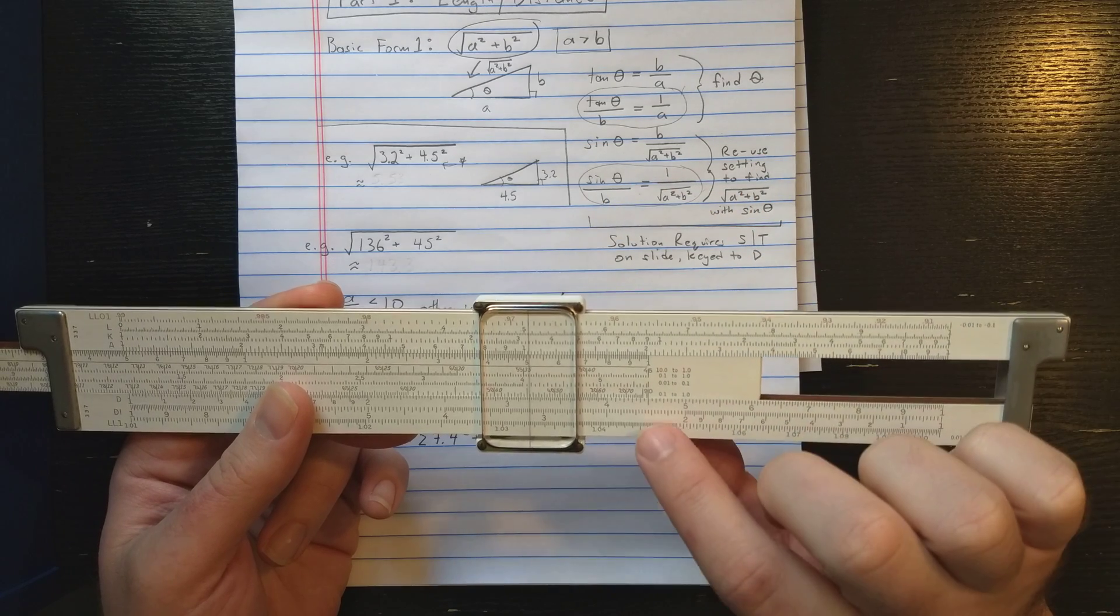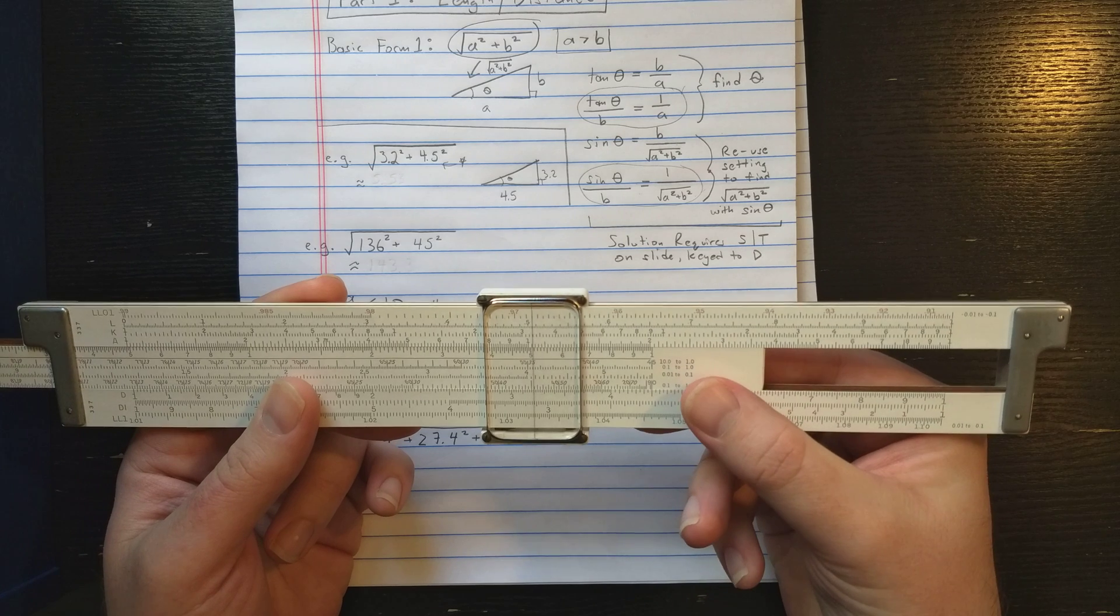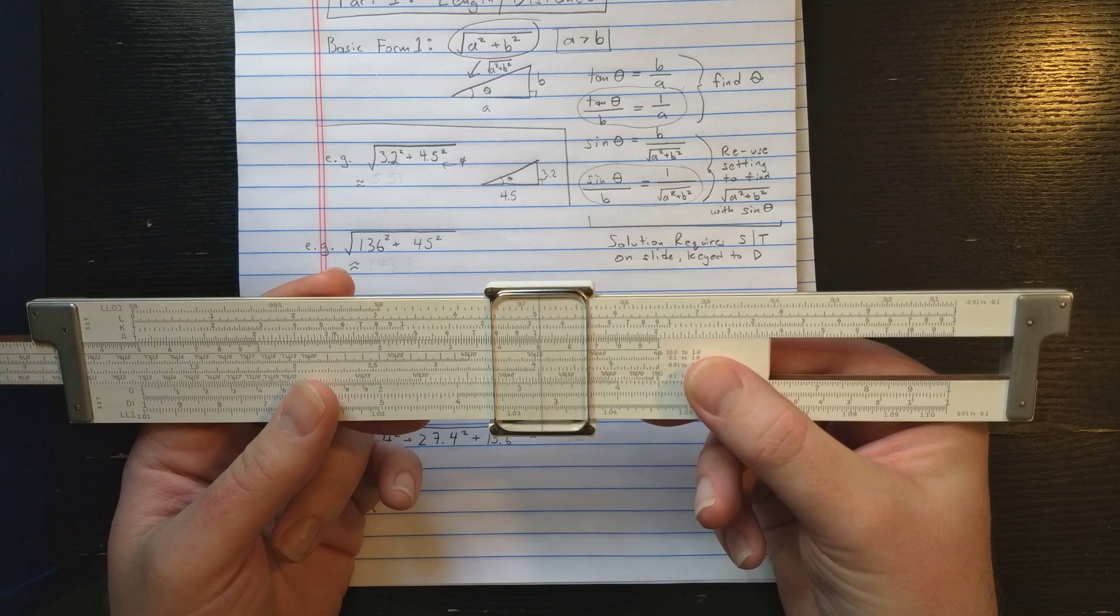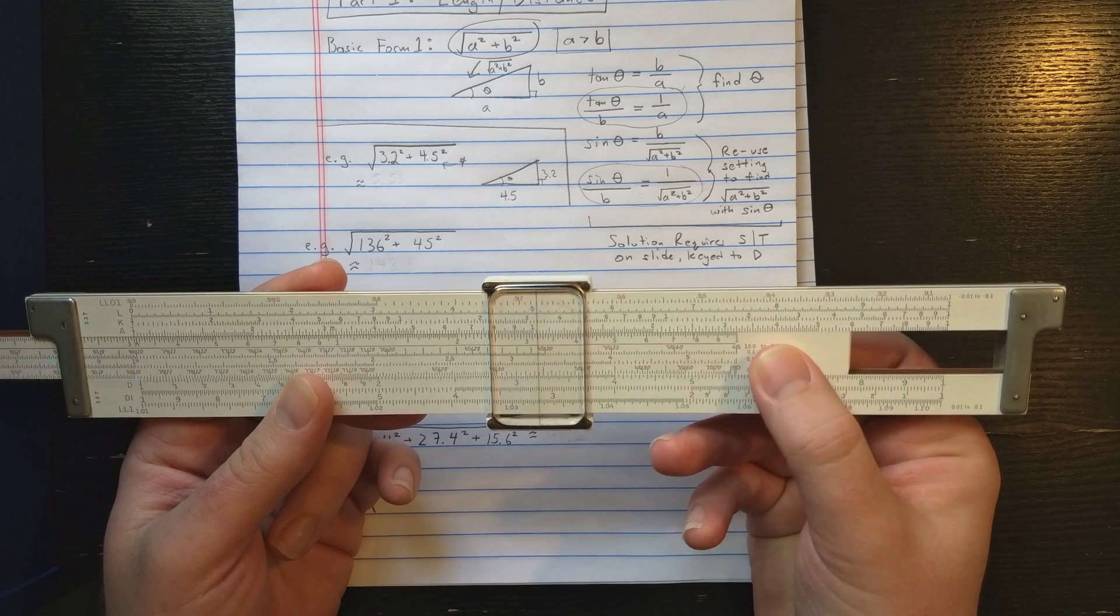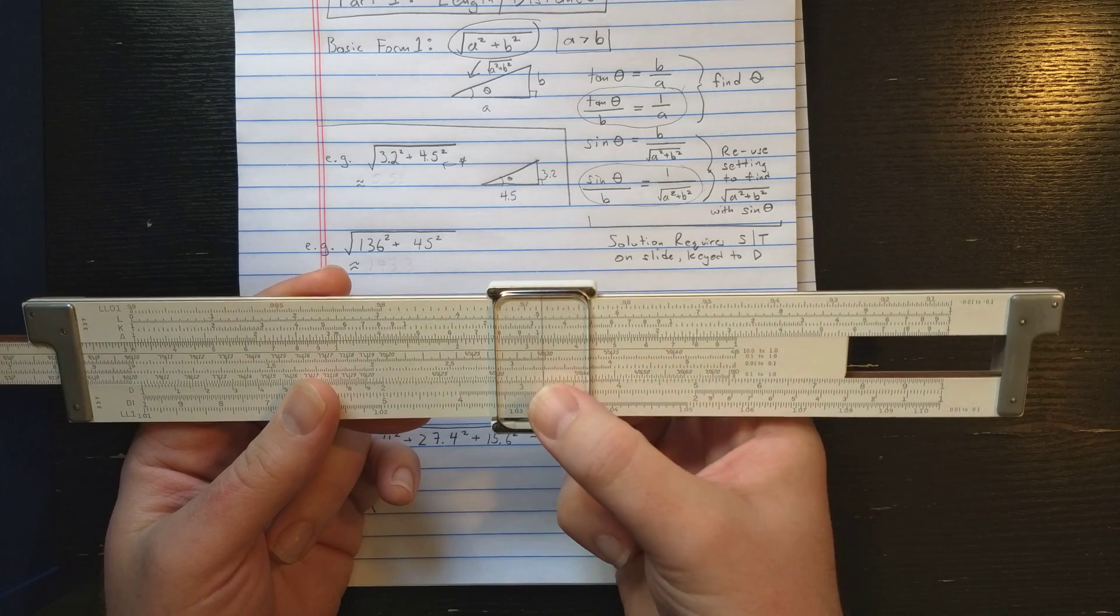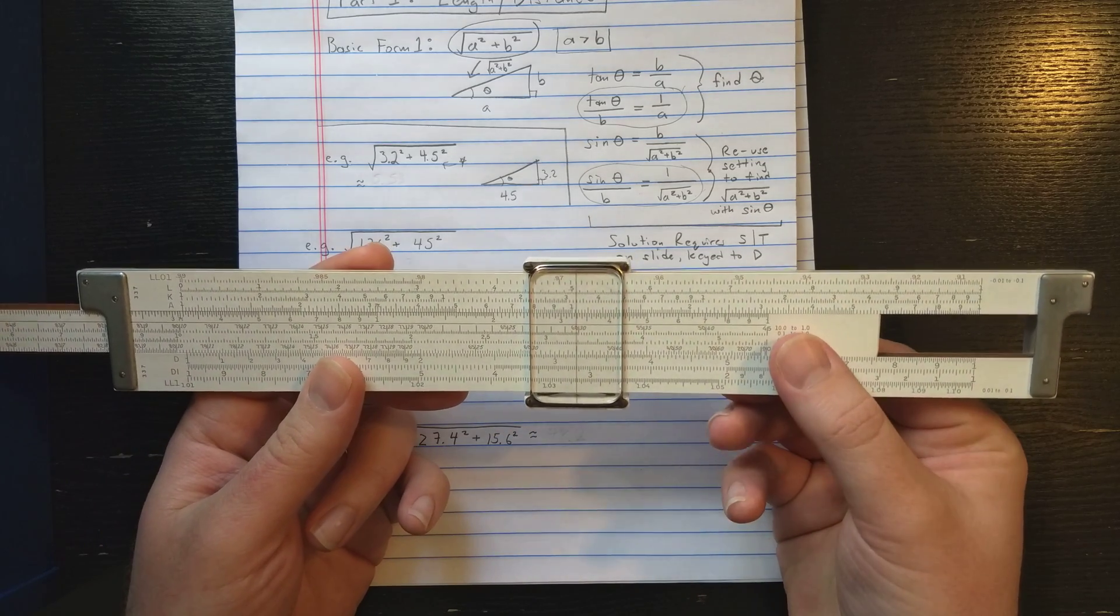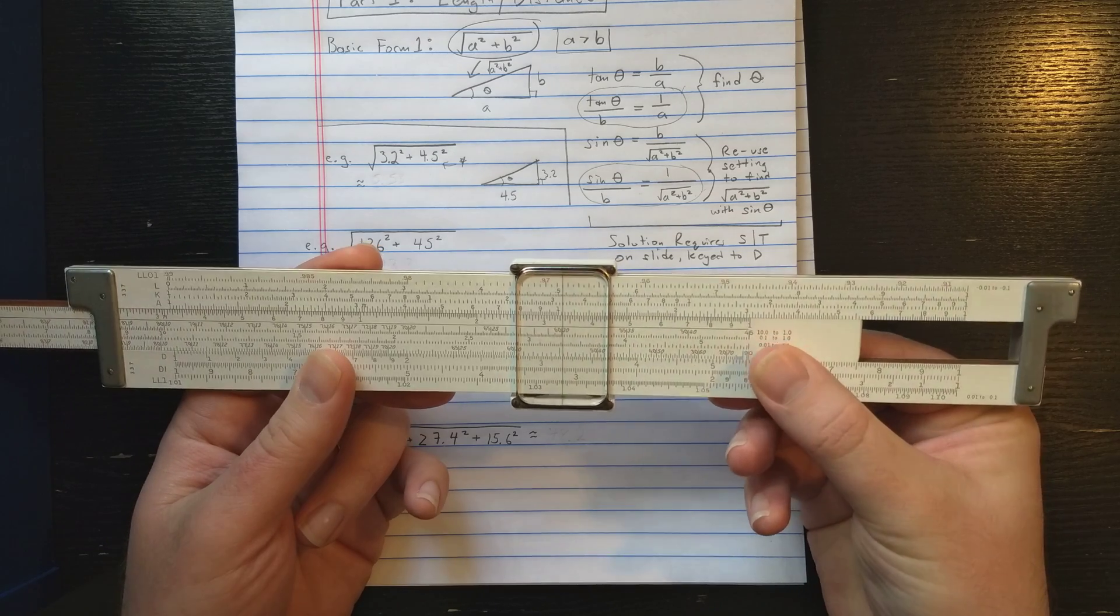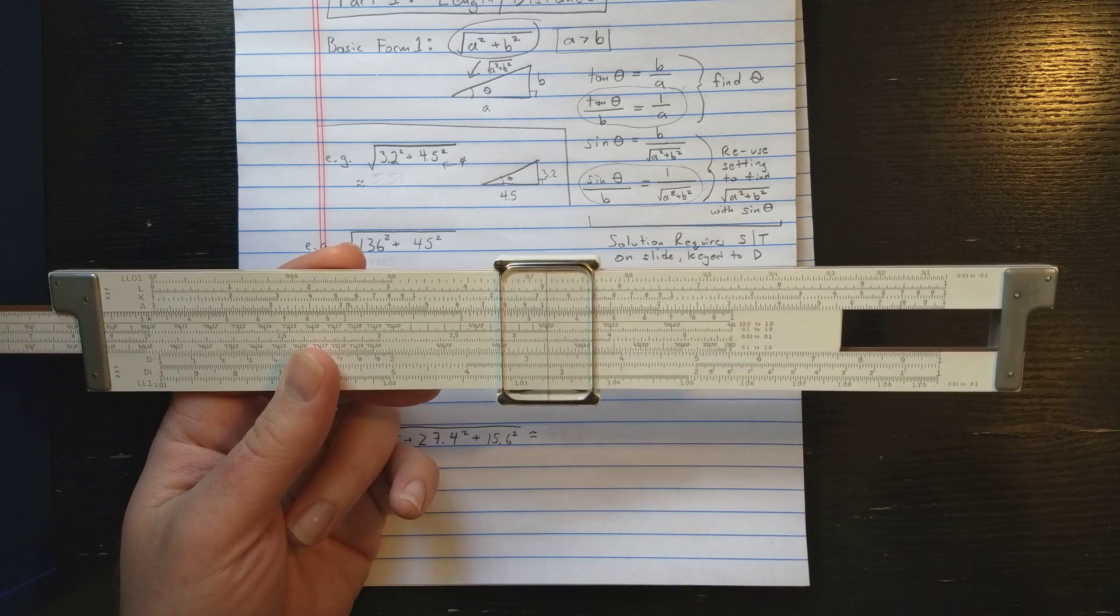To set up this proportion, I leave the B. So I leave B, which is the 3.2 here. What I do though, is I need to move that angle under the hairline on the S scale. So that angle again is 35.4. I'm going to move the S scale. Here's 35. S scale here is right above D. There's 35. So 35.4 about here.